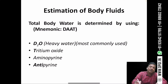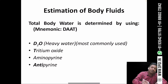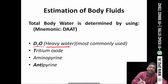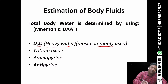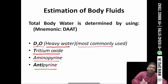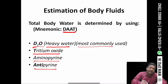Total body water is estimated using deuterium oxide, which is also called heavy water and is the most commonly used substance. Other substances used include TTM oxide, aminopyrin, and antipyrin. A mnemonic is 'DAT': D for deuterium oxide, A for aminopyrin, T for TTM oxide/antipyrin.